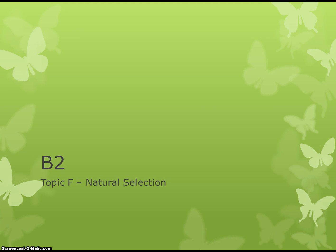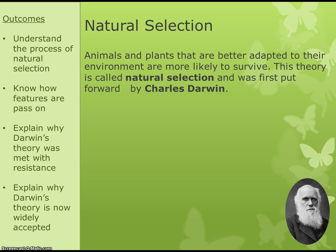Next up in our Biology 2 topic is natural selection. This unit is really all about Charles Darwin. Natural selection is a theory put forward by Charles Darwin where he said that animals and plants that are better adapted to their environment are more likely to survive, and therefore more likely to pass on their genes and adaptations to their children. Natural selection is the idea that the better adapted you are, the more likely you are to survive.